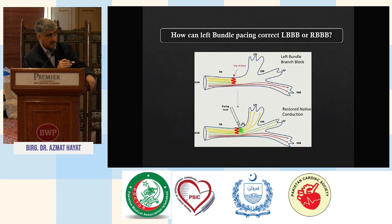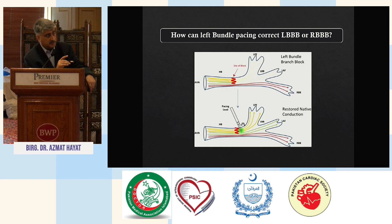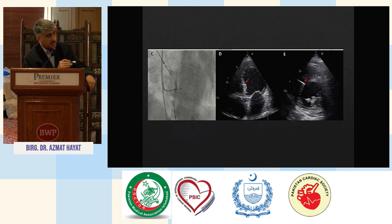The idea behind this is that in some of these patients, heart failure is caused by left bundle branch block. Ideal candidates are those with AV block along with heart failure. If this is a left bundle branch block and you can catch that area, you can produce physiological pacing. In video, you can see the left bundle being caught — this is the septum and that is the tip of the lead.